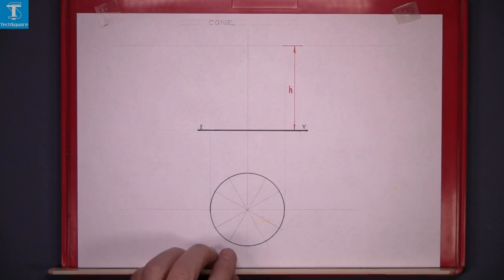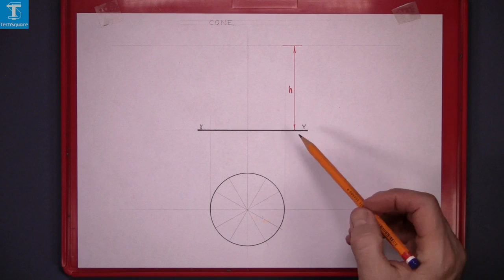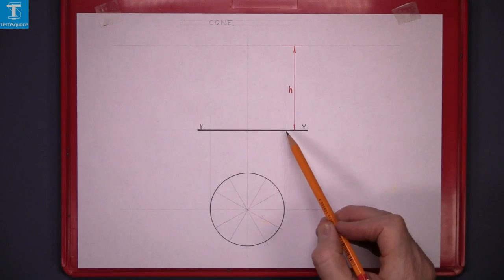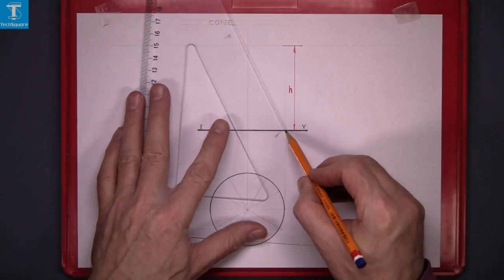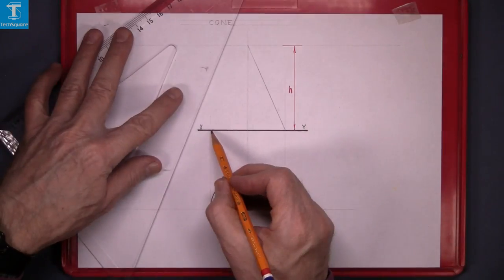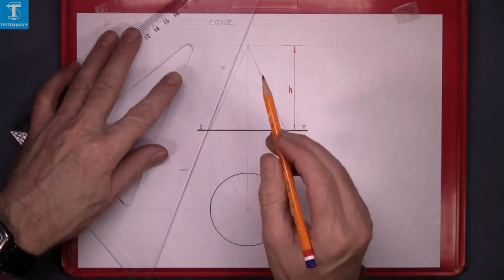Now to draw the elevation of the cone we bring the points up and bring the height across and join it up to the top. So join this point to the top here and that's the cone.